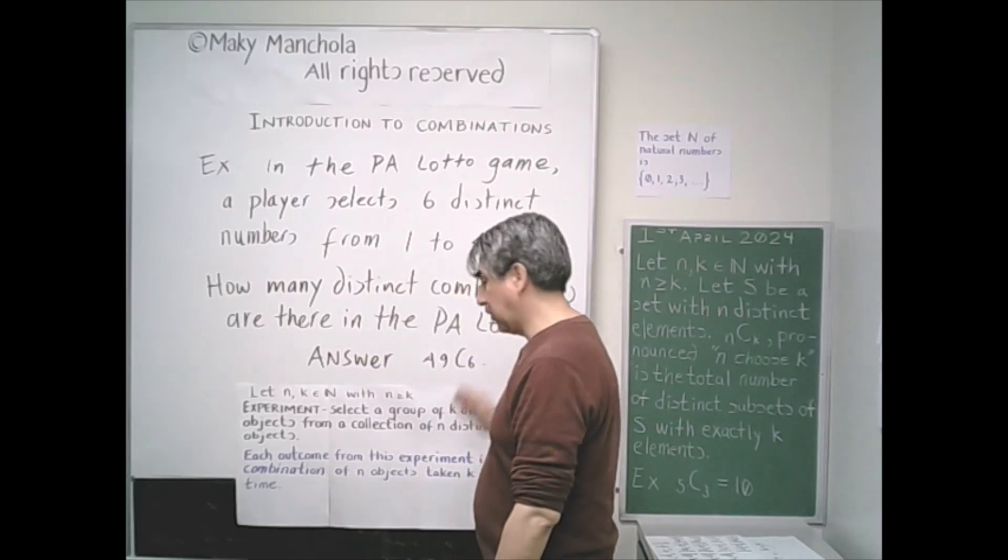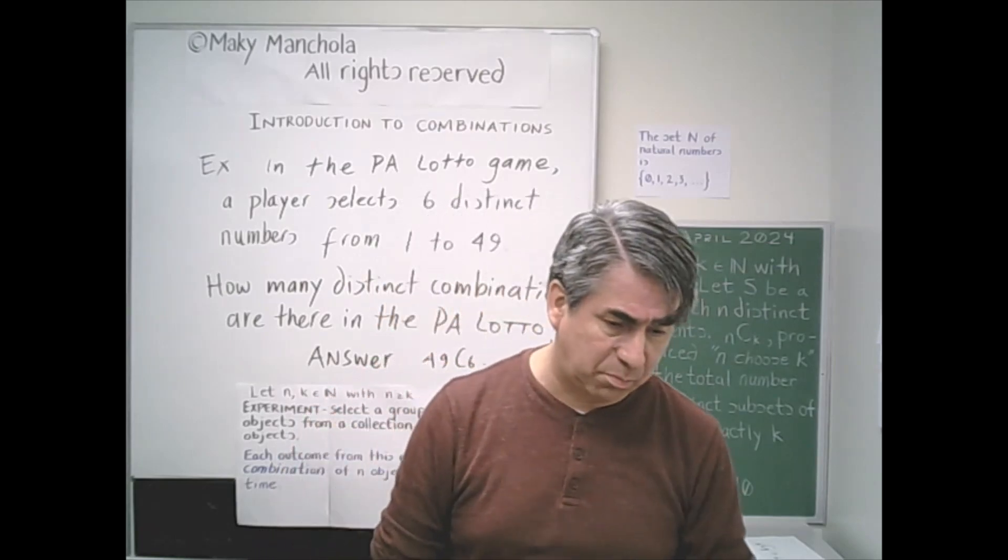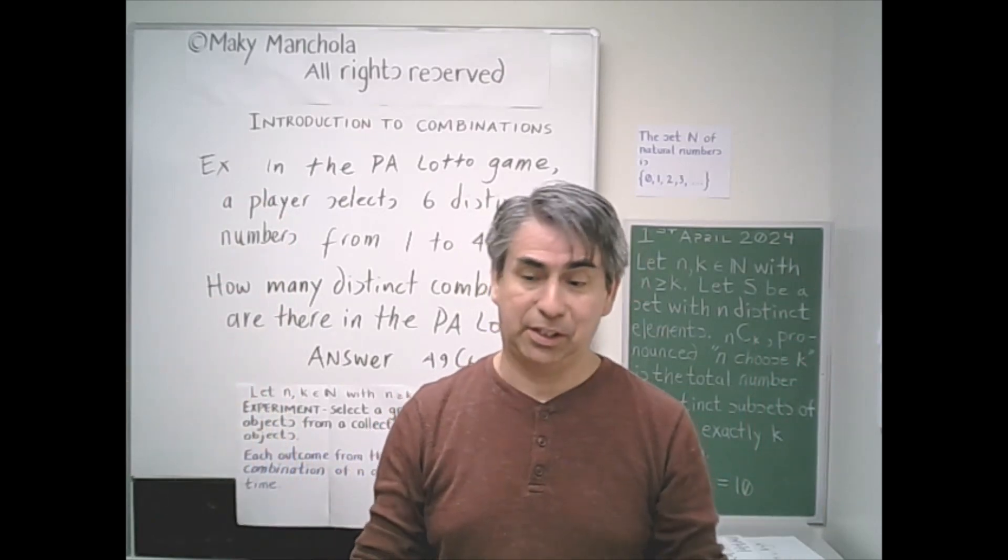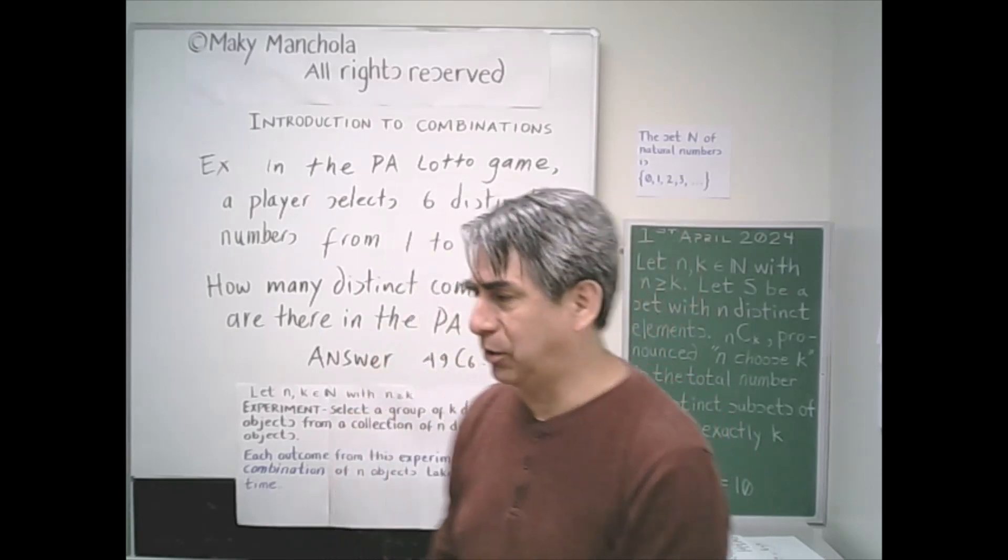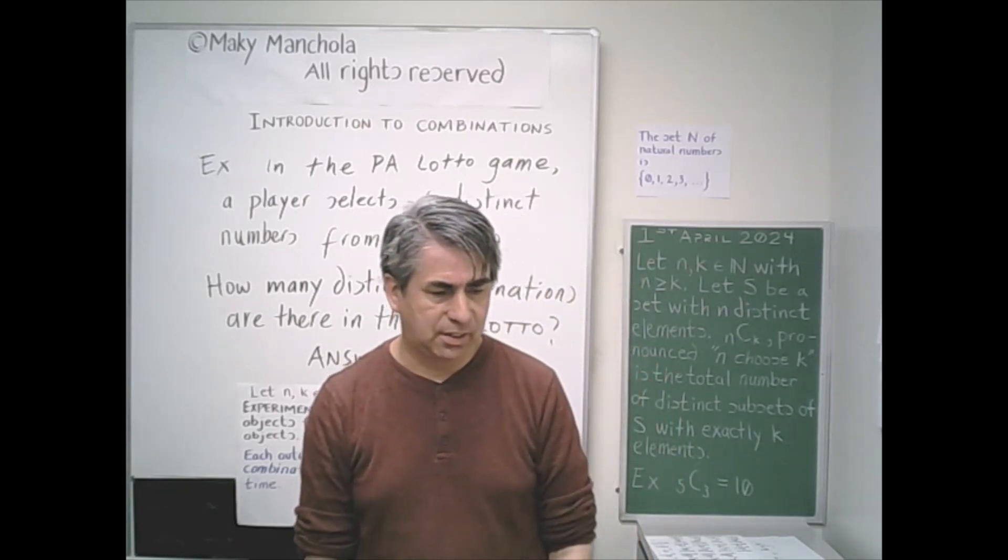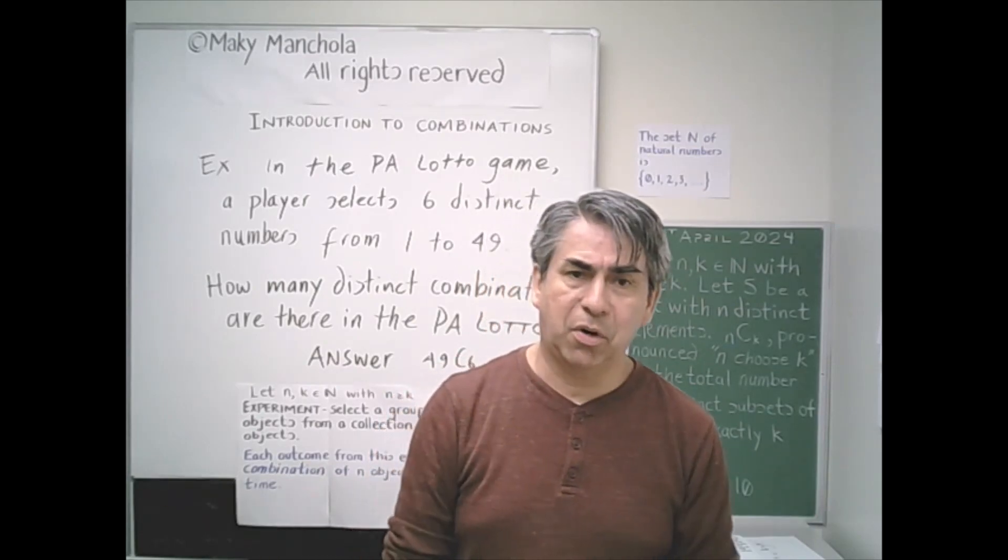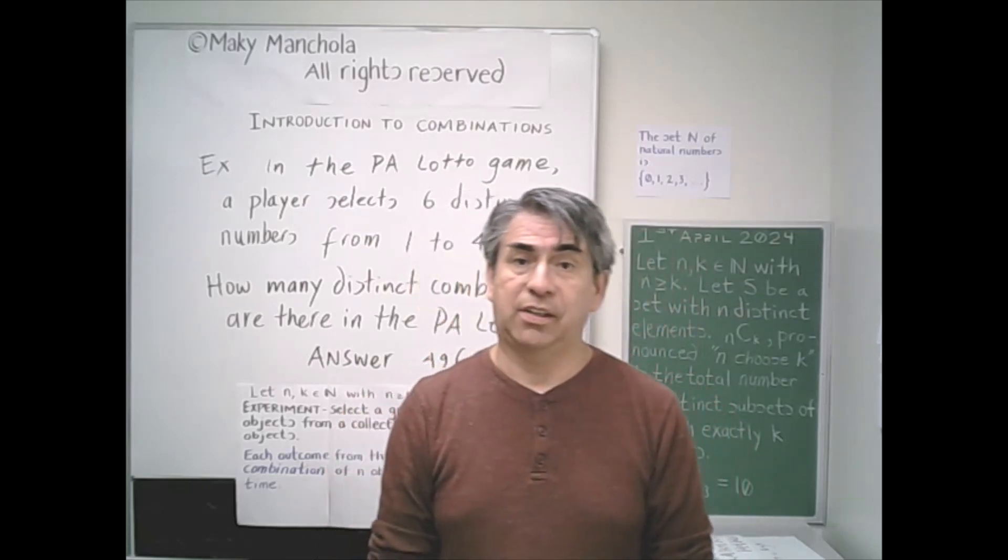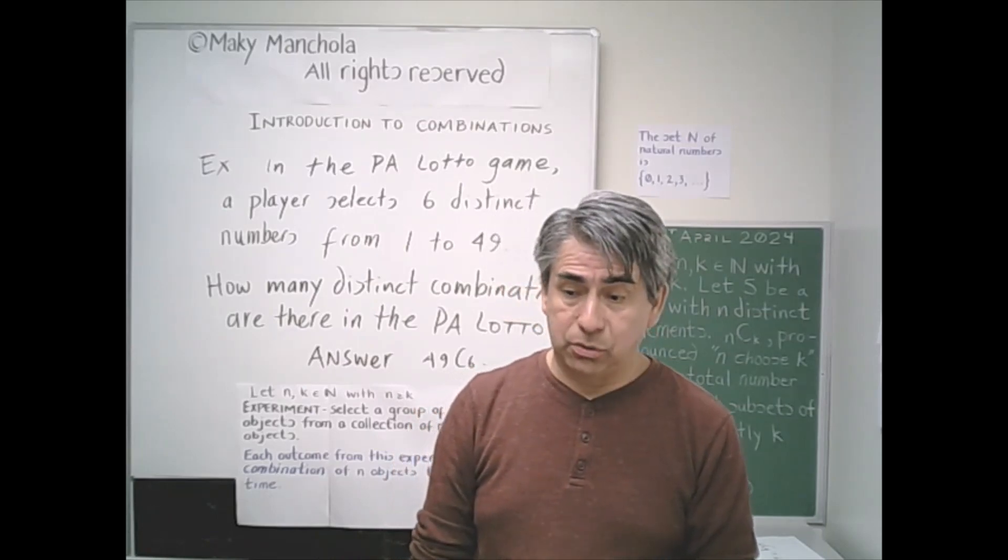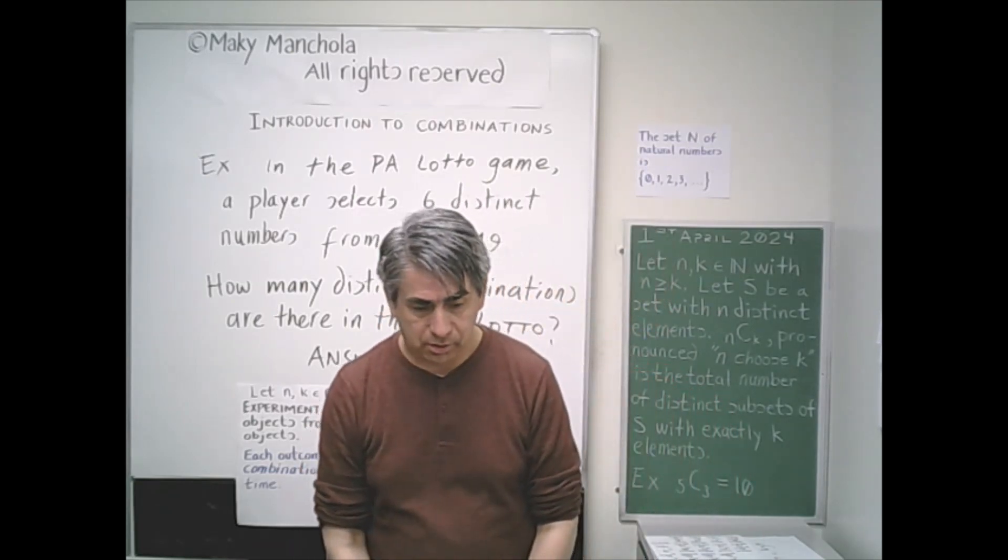Getting an answer to this will require something different than we did in our first two examples. What we did was to actually list the possible combinations and then count them. But that's not going to be feasible or easy to do with 49 choose 6. So here is a question: Is there a formula that finds N choose K? Answer, yes there is. And our goal is to obtain it, to derive it. That we will do in a separate presentation. That is all for now.